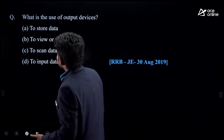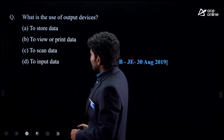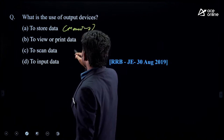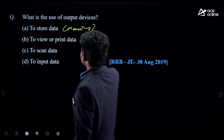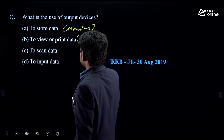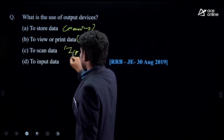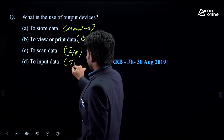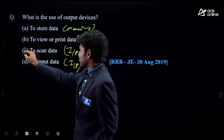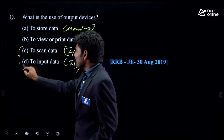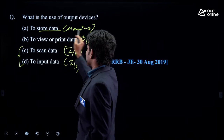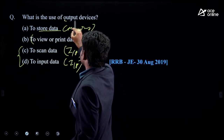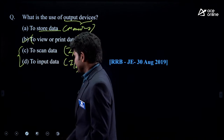What is the use of an output device? To store data, we use memory. To view or print data, we use output devices. To scan data or input data, we use input devices. Since they are asking about output devices, the answer should be 'to view or print the data.'